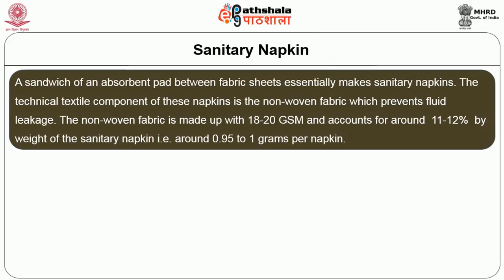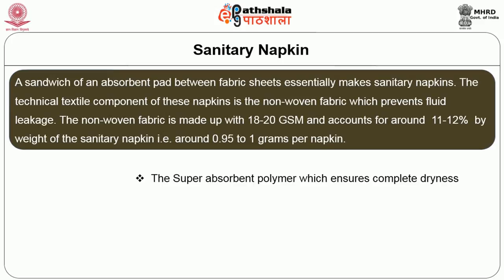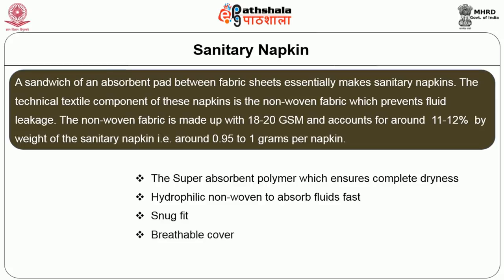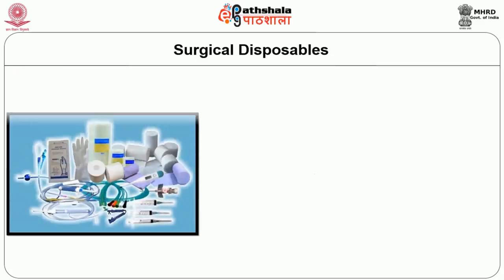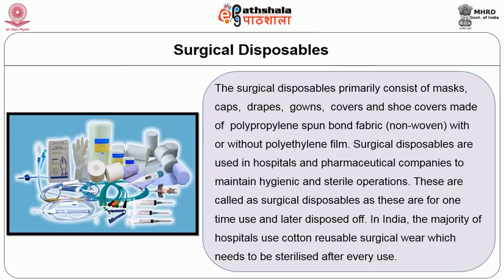A sandwich of absorbent pads between fabric sheets essentially makes sanitary napkins. The technical textile component of these napkins is non-woven fabric, which prevents liquid leakage. The non-woven fabric is made up of 18-20 GSM and accounts for around 11-12% by weight of the sanitary pad, that is around 0.95 to 1 gram per napkin. The major characteristics of these napkins are super-absorbent polymers which ensure complete dryness, hydrophilic non-woven to absorb fluid fast, a snug fit, and breathable covers.